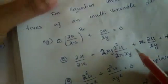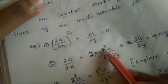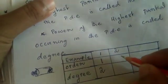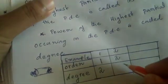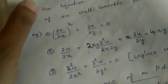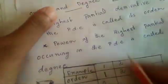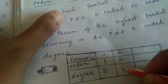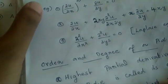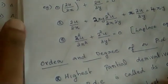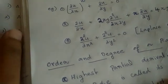For example 2, the highest partial derivative is the second-order derivative d²u/dx·dy, so the order is 2. The degree — the power of the highest partial derivative — is 1. For the third example, the highest partial derivative is also second order, giving order 2 and degree 1.